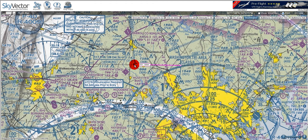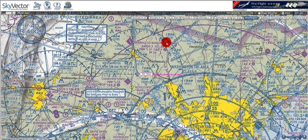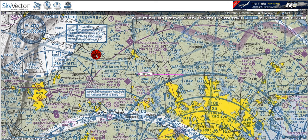So if we tune in to 117.90, we will get not only the radial that we're on, but also — if we have DME equipment onboard the aircraft — we can get our distance away from the VOR station. We've also got this compass rose going around the VOR station, which indicates where 0 is.